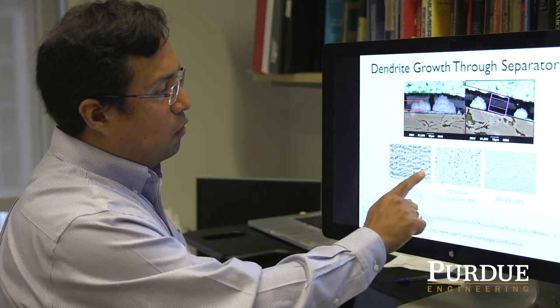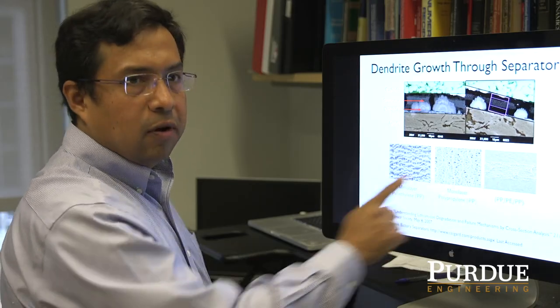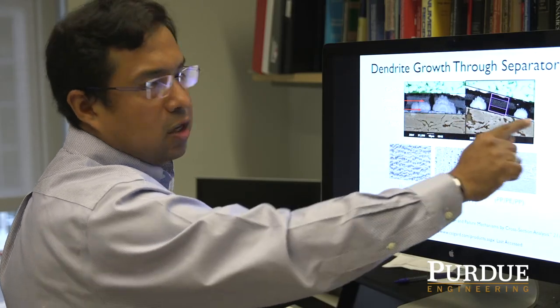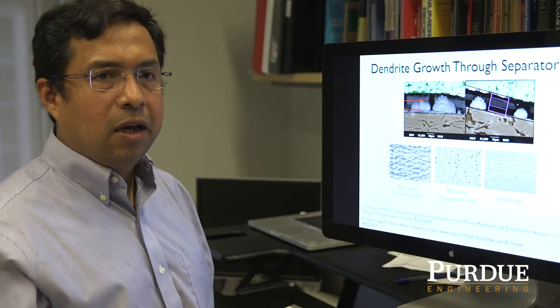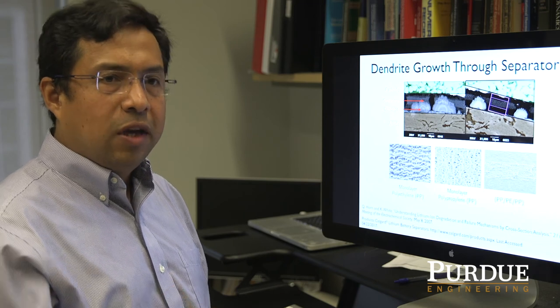Once you form it under normal conditions, you will never be able to get rid of it. Now we're going to be trying different types of separators, which is the layer that you can actually design in between, and the idea is to find structures that will promote one type of mechanism of dendrite growth with respect to the other, or a combination of any of these two mechanisms to suppress the lithium growth completely.